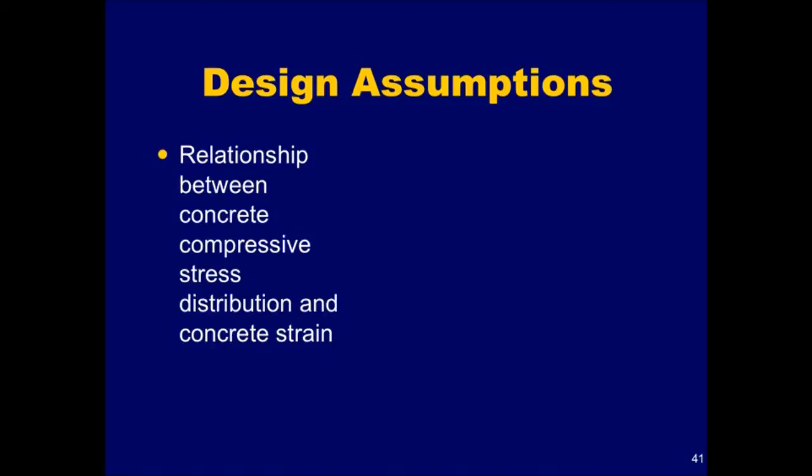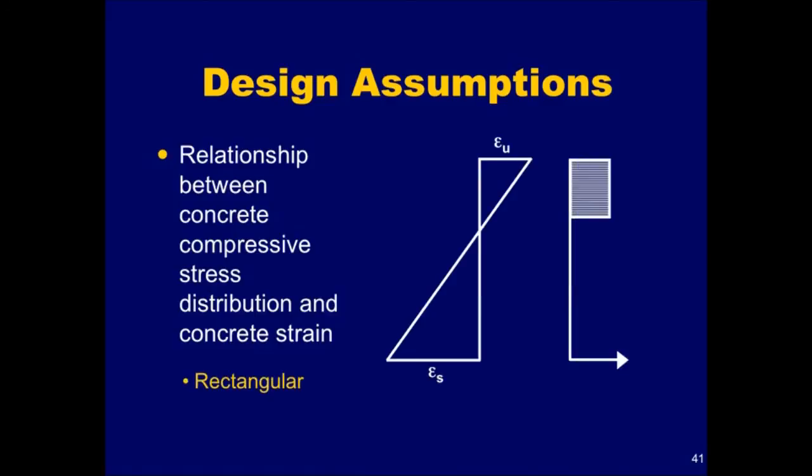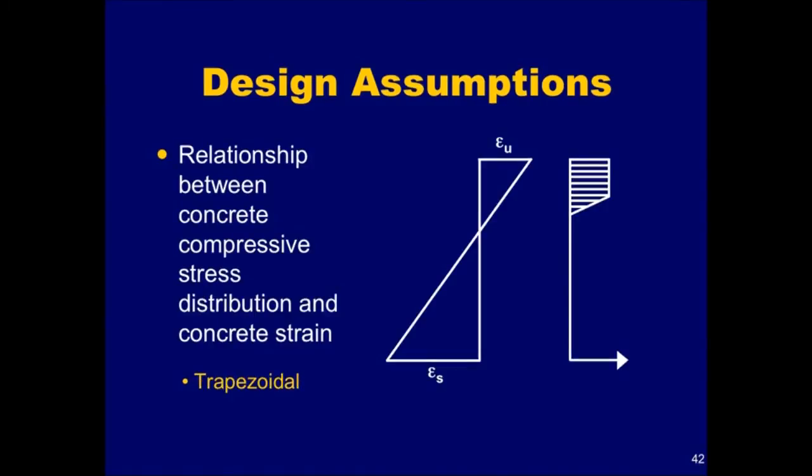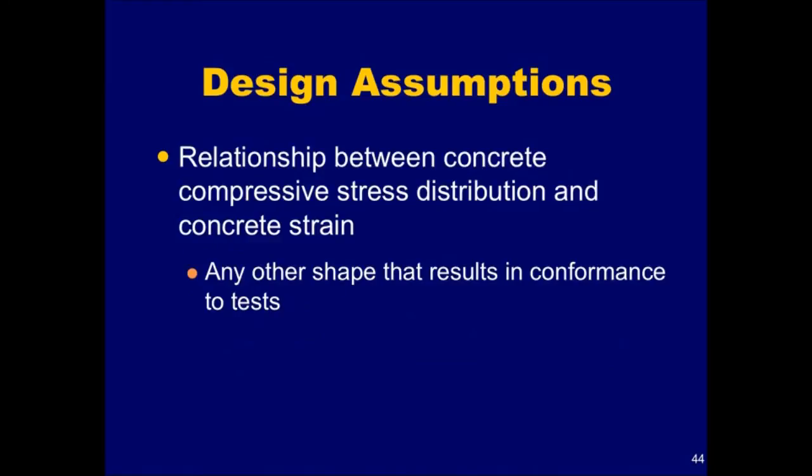The fifth assumption recognizes the inelastic stress distribution in concrete at high strains. In particular, the relationship between the concrete compressive stress and the concrete strain may be rectangular, trapezoidal, parabolic, or any other shape that results in predictions of strength that are in substantial agreement with the results of comprehensive tests.